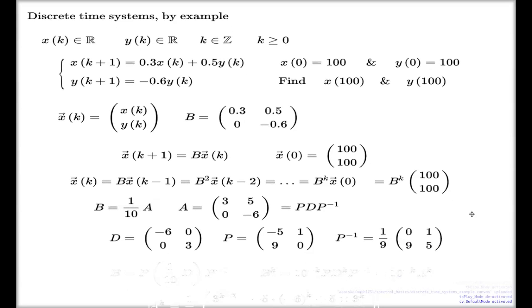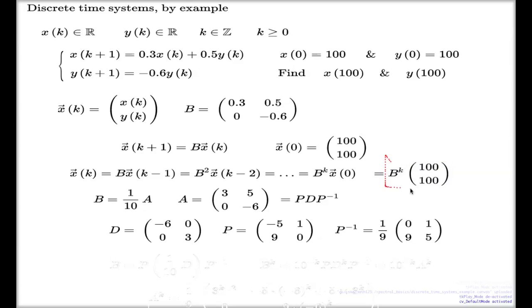So if I want to compute this right hand side, I make this observation: because B is one tenth of A, the diagonalization relation for the A matrix becomes the diagonalization relation for the B matrix, with the difference that this time I take D with one tenth factor. It will still be diagonal matrix, just 0.6 here and 0.3 here. The kth power of this B matrix will take this form.